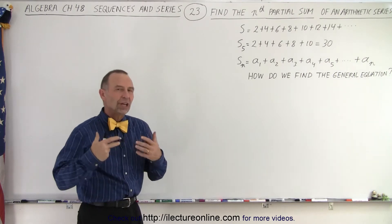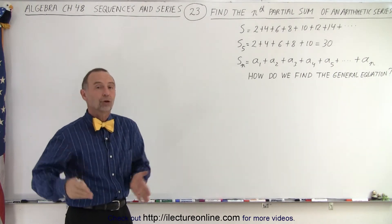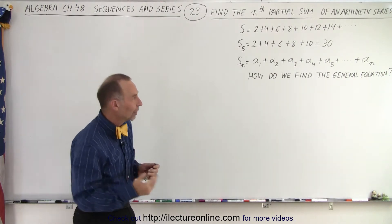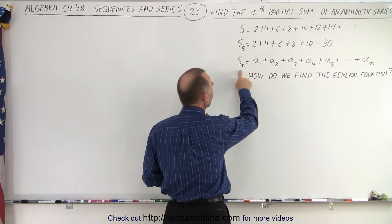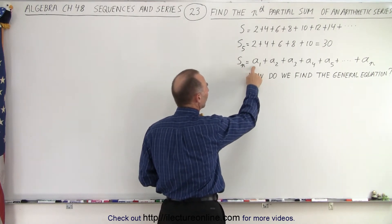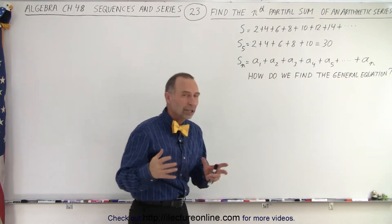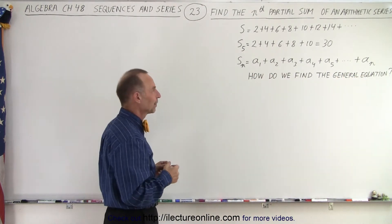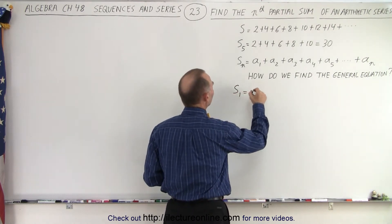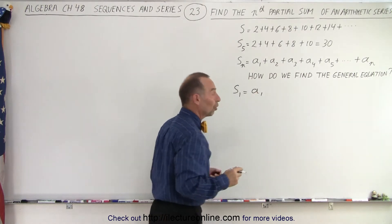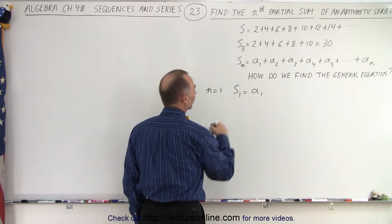But how do we come up with a general equation for the sum of the first n terms? S sub n means the sum of the first n terms: a sub 1 plus a sub 2 plus a sub 3, all the way up to a sub n. When n equals 1, S sub 1 simply equals a sub 1.